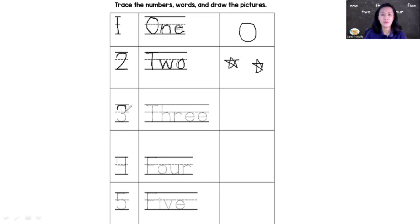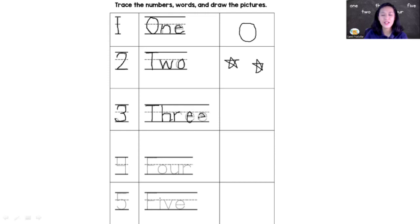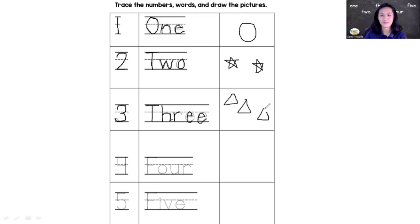This is the number symbol three. Curve in and around again — this is number three. And the number word: T-H-R-E-E. T-H-R-E-E. Number three. Let's draw three objects — three triangles. One, two, three. Three triangles!